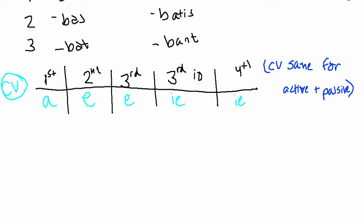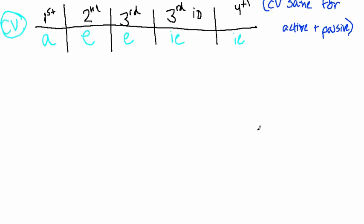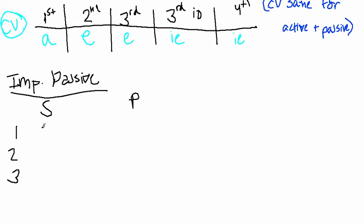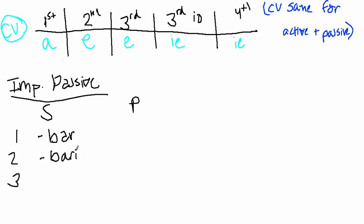Okay. So, imperfect passive endings are a combination of the imperfect active and the present passive. And you'll see what I mean once I write it. But let me just scroll down a little bit and make a new chart. Here are the endings. Singular, plural. One, two, three. And these are the imperfect passive endings. And it goes bar, baris, batur, bamur, bamini, bantur.